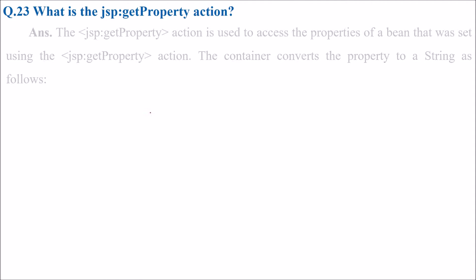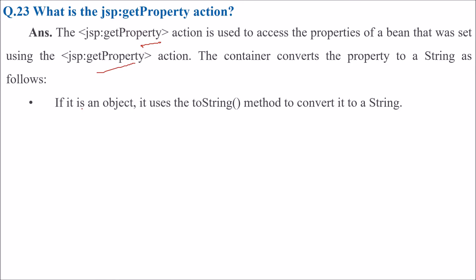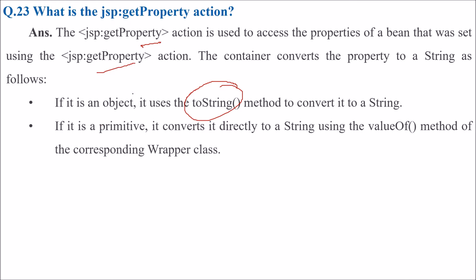What is the JSP getProperty action? This JSP getProperty action is used to access the properties of a bean that was set using the JSP setProperty action. The container converts the property to a string: if it is an object, it uses the toString method; if it is a primitive, it converts it directly to a string using the valueOf method of the corresponding wrapper class.